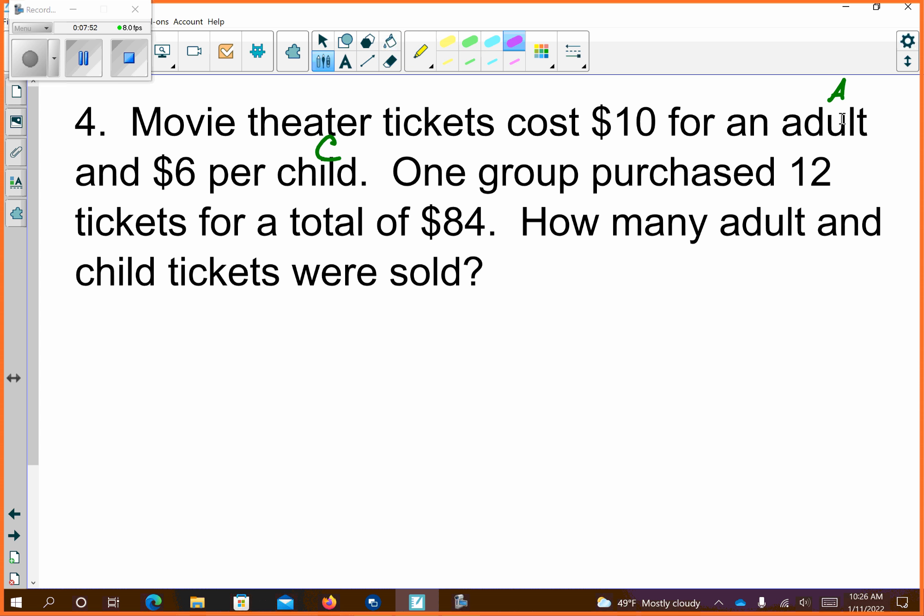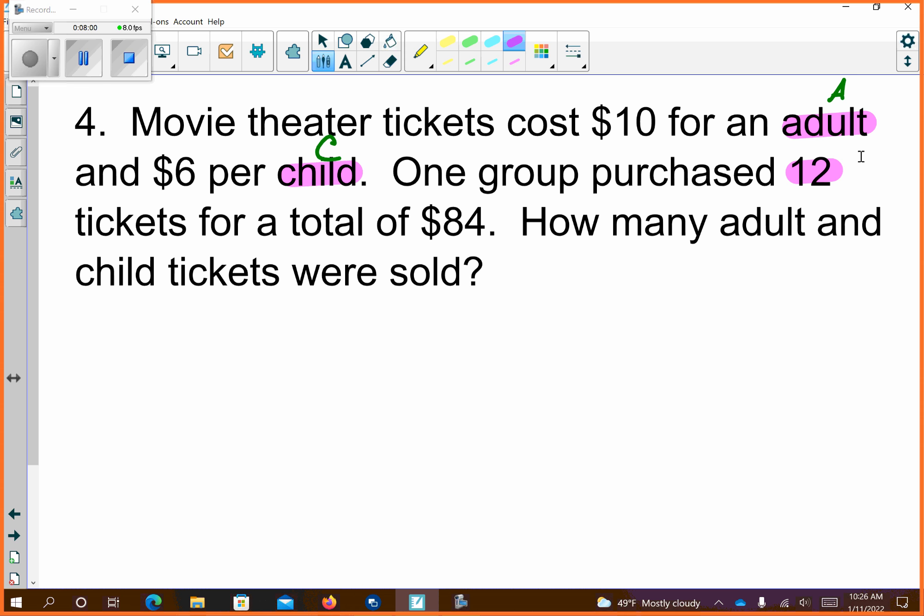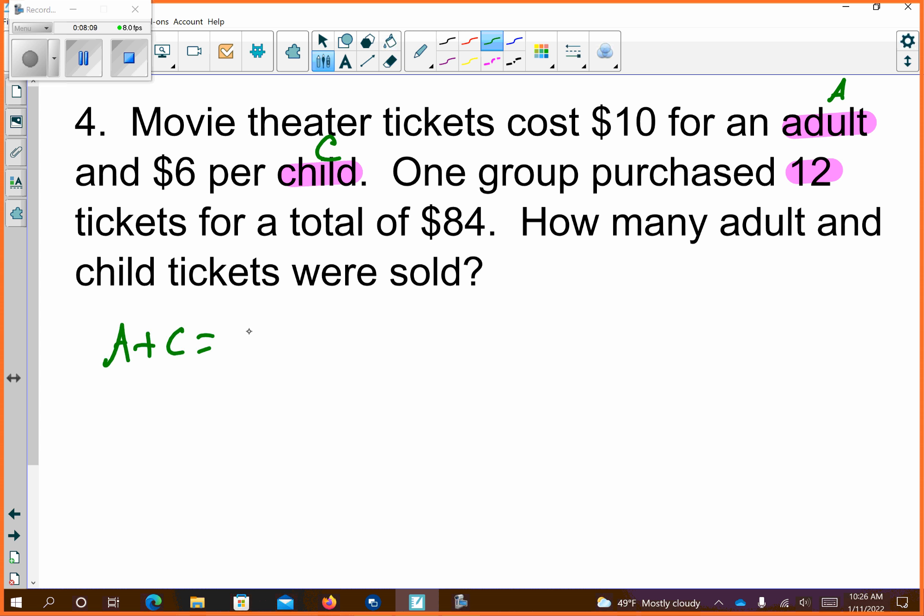So let's refer to adults as capital A and child as C. All right, so first off let's highlight this way. We have adult and child and 12. How would we make an equation? A plus C equals 12. So then we have a money value. Adult tickets cost 10 and $6 for child and it was 84. So we have a quantity amount and then we have a money amount. 10A plus 6C equals 84.